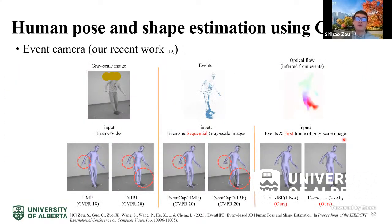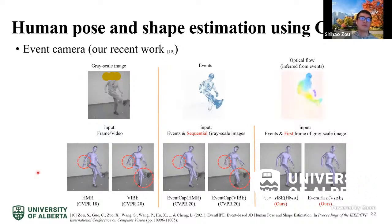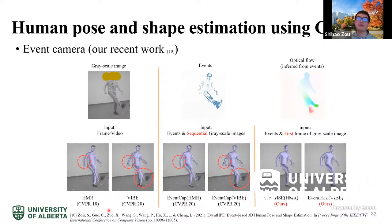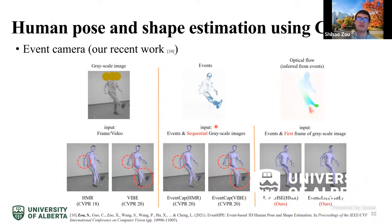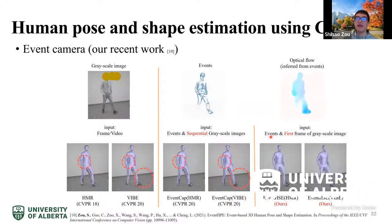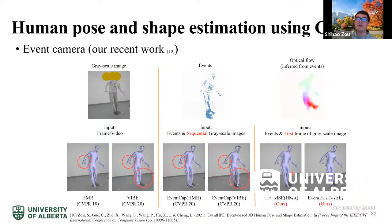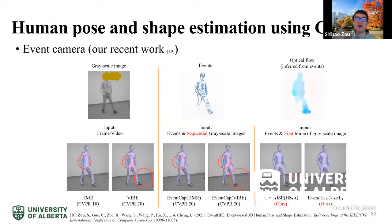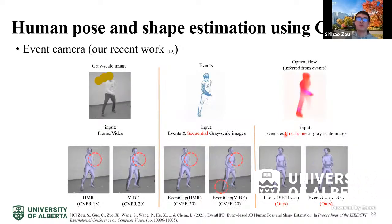We compare our work with previous methods. The first column shows HMR or VRBE, which estimates pose from RGB images. The middle column shows EventCap, the most recent work that uses events and sequential grayscale images. Our work only requires events and the first frame of grayscale image, yet can still accurately estimate the person's pose through time. The sequential grayscale images shown are for reference only and are not used as input.